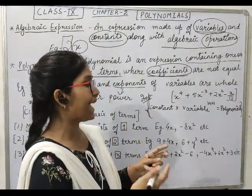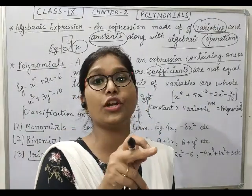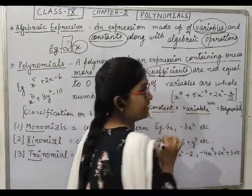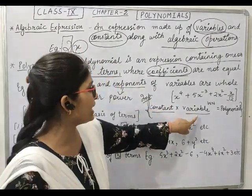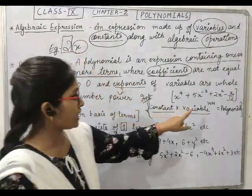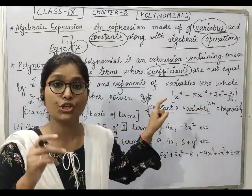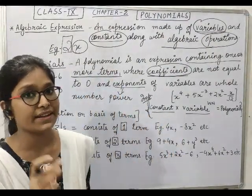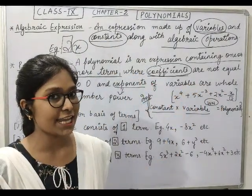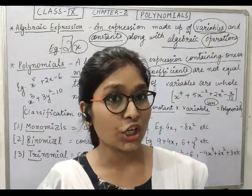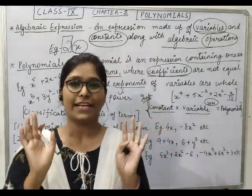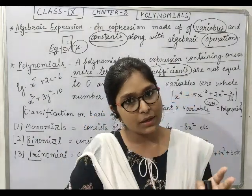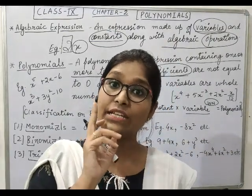So the formula for this, or we can say not exactly the formula but in which form we can write and understand: this is constant multiply variable. Constant I told you is the number and variable I told you is x. And the power of variable should be compulsorily, it should be mandatory that the power of variable should be whole number. A whole number - I need not tell you but still: whole numbers are those numbers like counting numbers including zero. Power zero can also be there of any number.